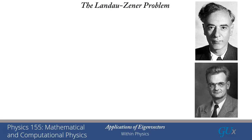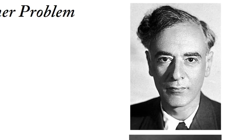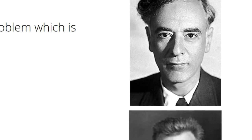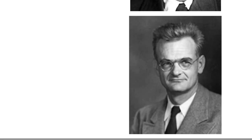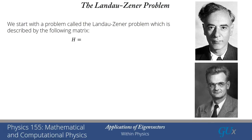The first one is called the Landau-Zener problem. The person on the top right is Lev Landau, a very famous Russian physicist who won the Nobel Prize. The lower one is Zener — I think it's Clarence Zener. He's a German physicist, not quite as famous as Landau, although he was a highly accomplished physicist, and the problem that they solved involved the following matrix.